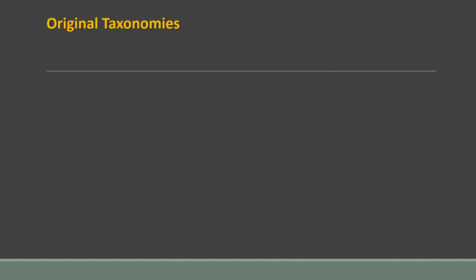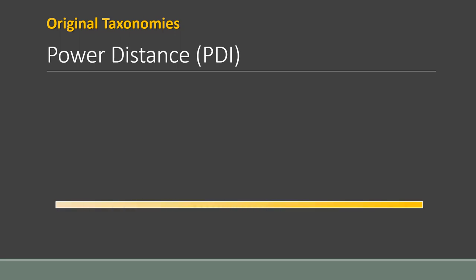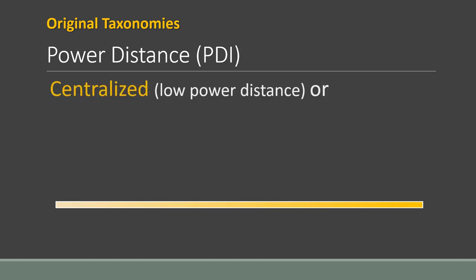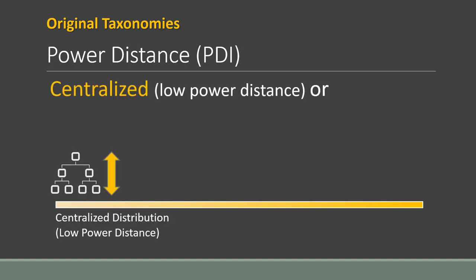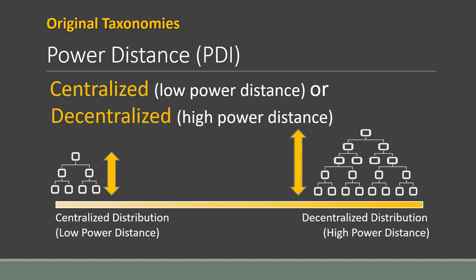A second dimension is power distance, abbreviated PDI. While power between people and cultures can never be 100% equally distributed, some cultures have more of a centralized distribution of power, while others have a decentralized, more spread-out power distribution. Think of power as the power others have over you. If someone tells you to do something, how likely are you to do it? It often depends on who that someone is, what position they hold, and who you are.